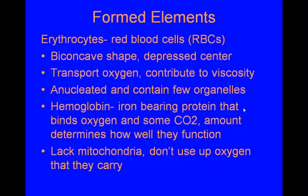Red blood cells are anucleated and contain very few organelles. They contain hemoglobin, the iron-bearing protein that binds oxygen and a small amount of CO2. One important adaptation is that red blood cells lack mitochondria — they have ejected them. This is important because mitochondria use oxygen to make ATP, and since the major function of red blood cells is to carry oxygen, you wouldn't want them consuming the oxygen they're transporting.